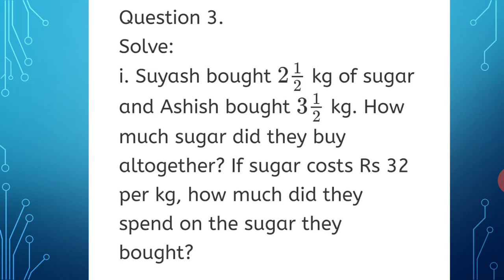Question 3: Word problems. First one — Suyash bought 2 and 1 upon 2 kg of sugar and Ashish bought 3 and 1 upon 2 kg. How much sugar did they buy altogether? If sugar costs Rs. 32 per kg, how much did they spend on the sugar they bought? Let's see the solution.